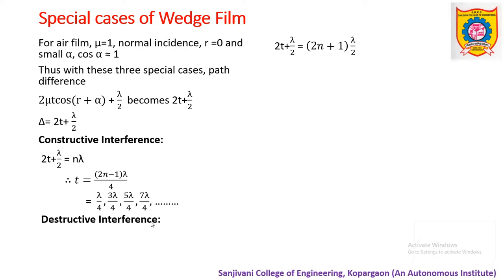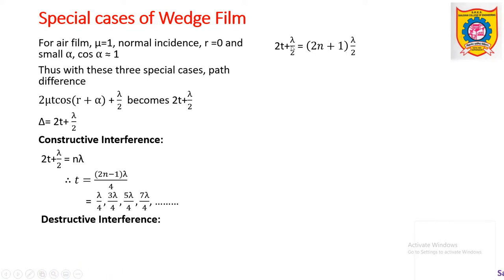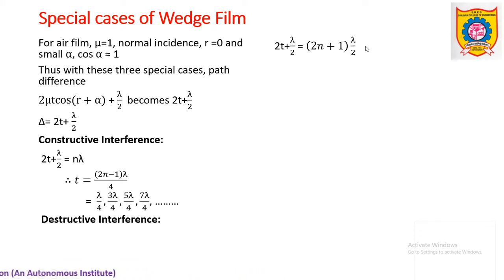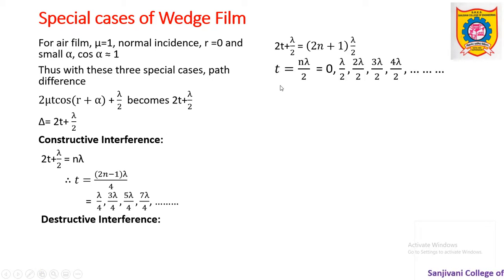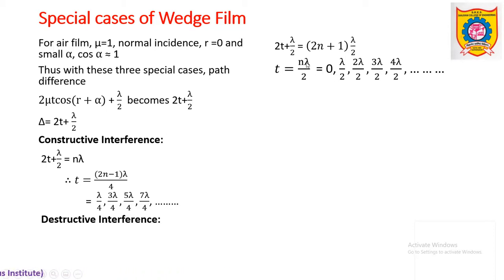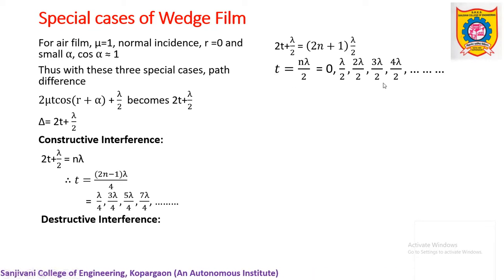For destructive interference, the condition is 2t + λ/2 = (2n+1)λ/2. Simplifying this for t by shifting λ/2 to the RHS gives t = n·λ/2. Putting in values of n: at n = 0, t = 0; then for n = 1, 2, 3, ... we get λ/2, 2λ/2, 3λ/2, and so on. These are the values of thickness at which dark fringes occur.